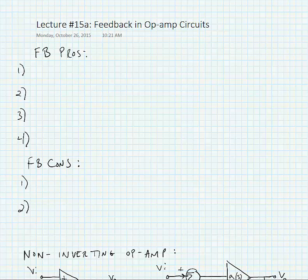We're going to start looking at compensating op-amps in order to make them stable across all operating voltages and ranges. Before we do that, we're going to look at feedback in op-amp circuits, which is what necessitates compensation.